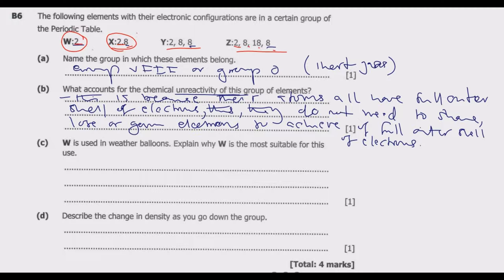If you look at W, W is ideally helium. You can check on the periodic table. Helium has the lowest density among these elements.